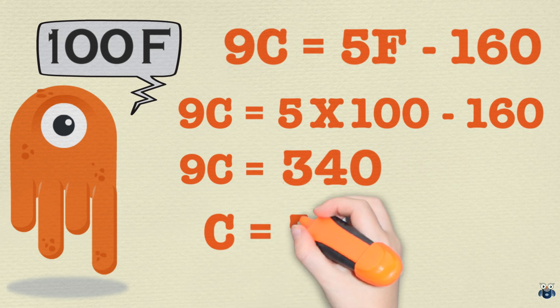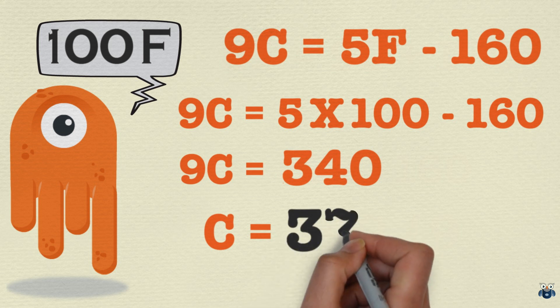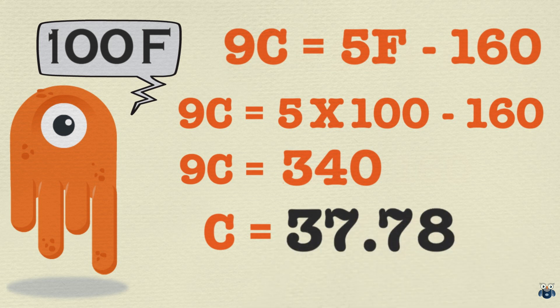Or C equal to 340 divided by 9, which is 37.78. So 100 degrees Fahrenheit is 37.78 degrees Celsius.